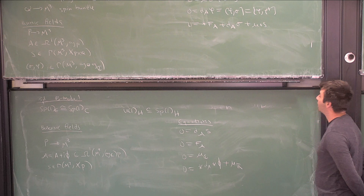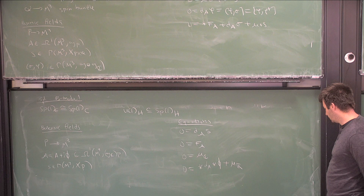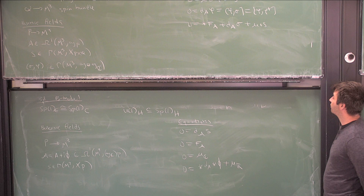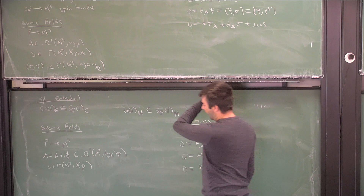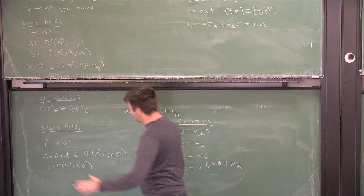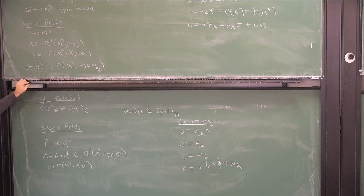I want to pick up where we left off last time. I had described two three-dimensional classical field theories that one can get starting from a hyper-Kähler manifold with a hyper-Hamiltonian G action and a permuting action of the equatorials. The first one was called the 3D A-model, and the reason it's called that is because we'll see later it's like some sort of categorification of the ordinary 2D A-model about the GIT quotient.